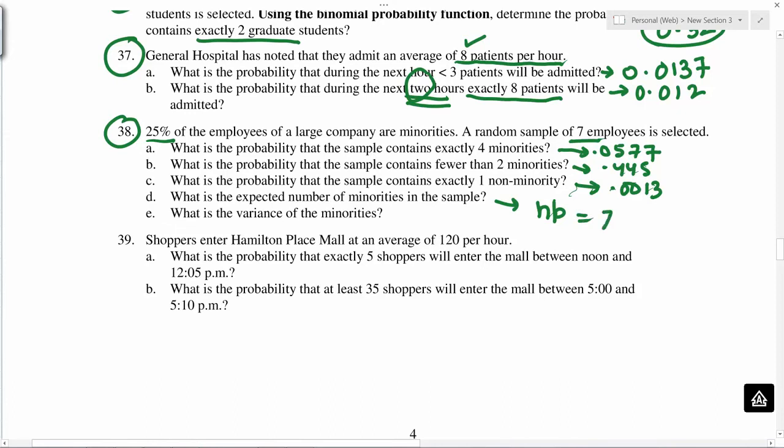Expected number of minorities, so this is n times p. So you know, n is seven and p is 0.25. So this equals seven times 0.25. Variance, n times p times 1 minus p.